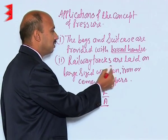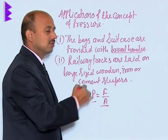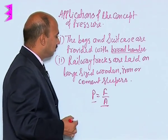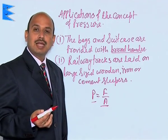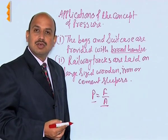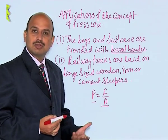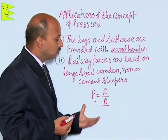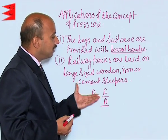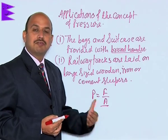Railway tracks are laid on large-sized wooden, iron, or cement sleepers. By using these large sleepers, the area increases. Because of the increase in area, pressure reduces, and so there is not much pressure on the ground — the railway tracks remain as they are and are not deformed.